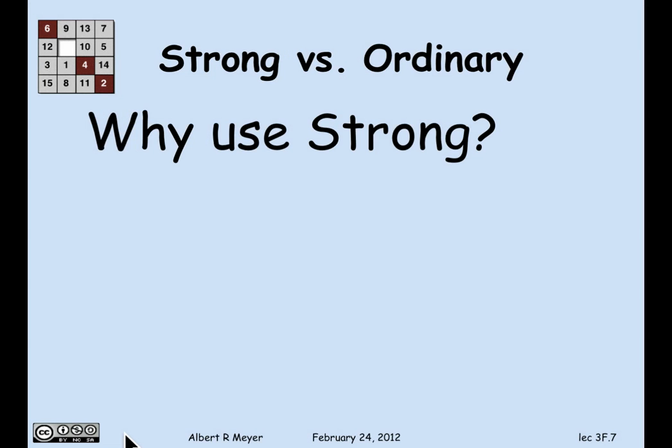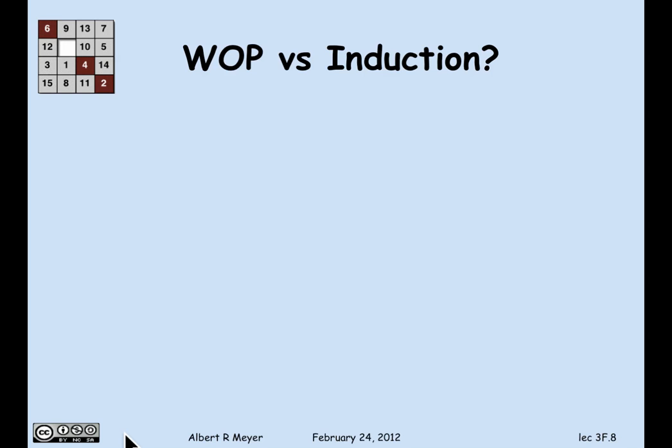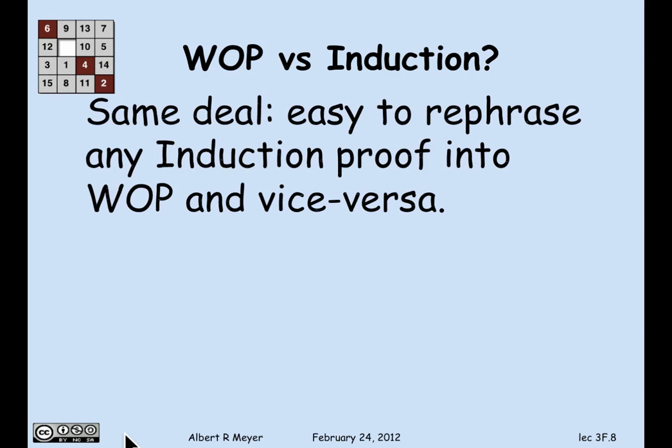Why use strong induction then? Precisely because it's cleaner — you don't have to write 'for all k less than or equal to n' throughout. Regarding the well-ordering principle: it's basically the same deal. You can easily rephrase an induction proof by transforming its template to fit a well-ordering proof template, and vice versa. Without going into the details — it's routine — the well-ordering principle adds no new power or even new perspective. It's just a different way to organize and tell the same story.